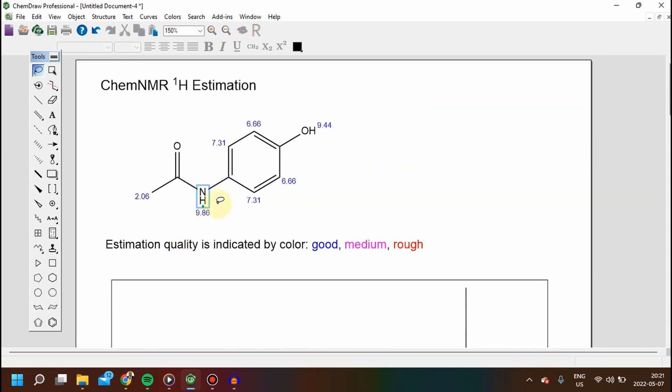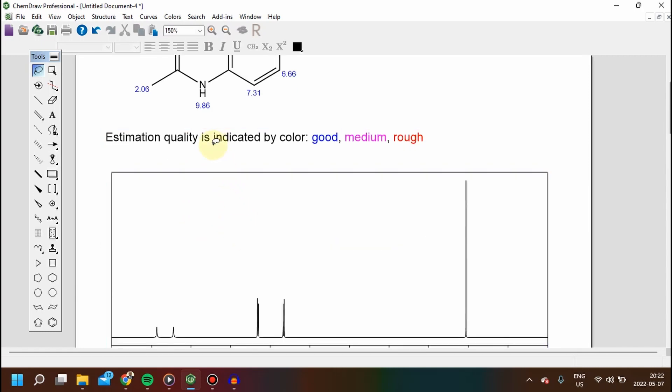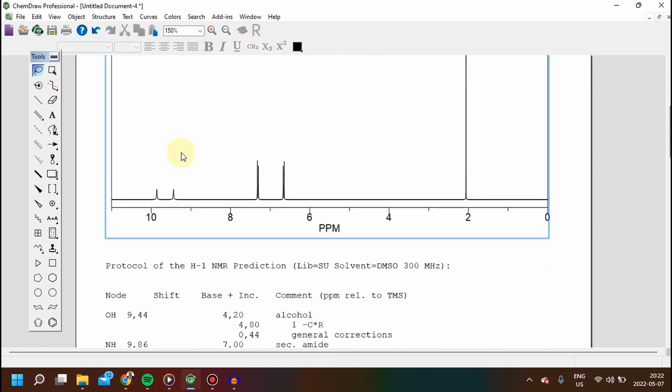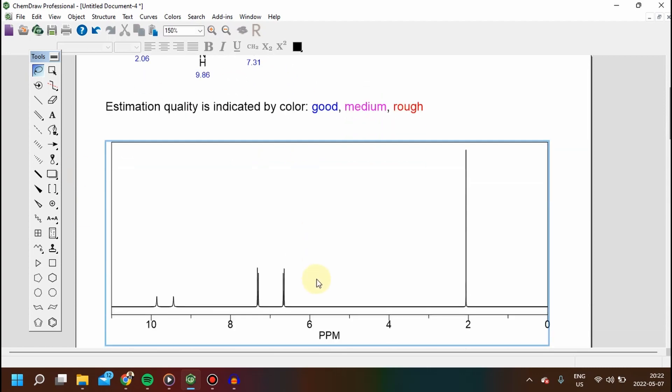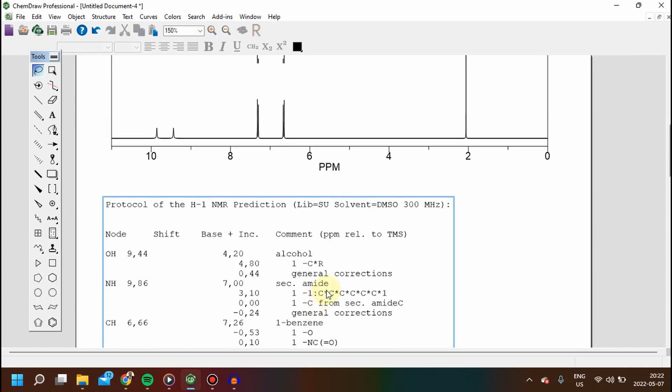Similarly, we have a proton connected to the nitrogen which is also highly deshielded. Down here we have the spectrum graphically representing the numerical data for the chemical shifts. That is it.